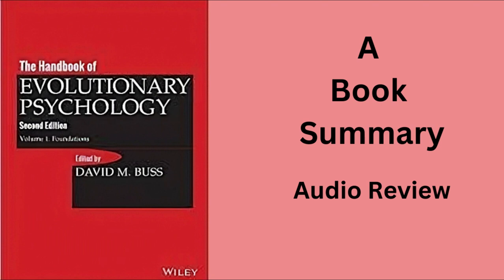The book explores how evolution has shaped the human mind, and how it has adapted to solve specific problems such as survival, reproduction, and social interactions. The author delves into the evolution of various cognitive and emotional processes such as perception, memory, problem-solving, and decision-making, as well as human emotions including love, jealousy, and aggression.